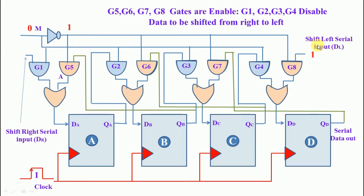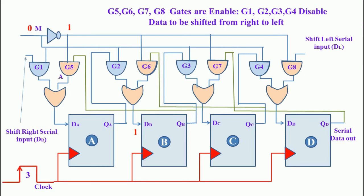Now the data is on the right-hand side and is loaded into DD. Applying the first clock pulse, the DD data moves and is loaded into DC. Applying the second clock pulse, the data moves from DC and is loaded into DB. Applying the third clock pulse, the data moves and is loaded into DA. After the fourth clock pulse, DA shifts out. This shifting operation is called right to left shift.